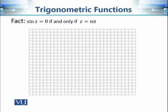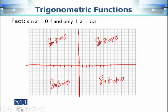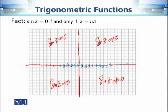Let us look at where these zeros lie on the complex plane. With π as the unit, the zeros are at ..., −2π, −π, 0, π, 2π, 3π, ... These are all the zeros of complex sin(z), and they all lie on the real axis. At every other point in the complex plane, sin(z) is never zero.